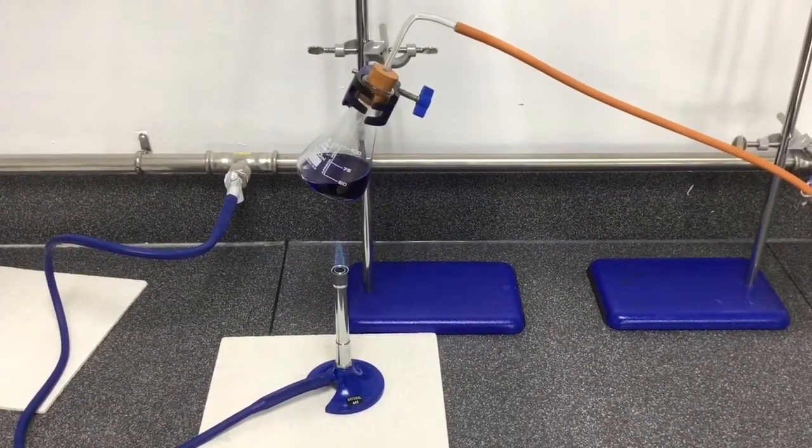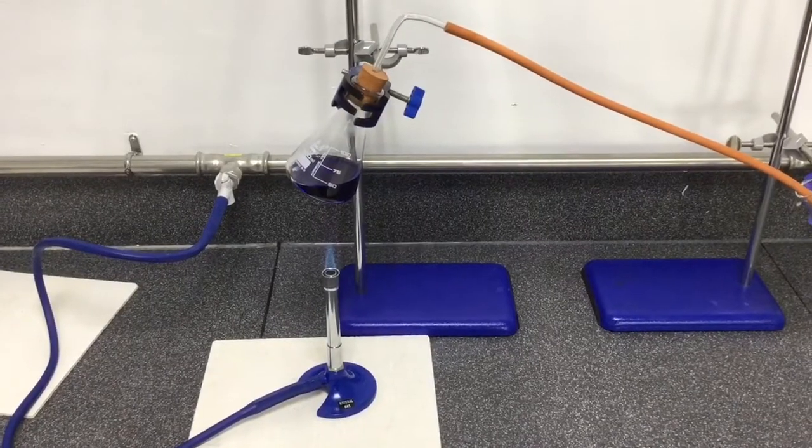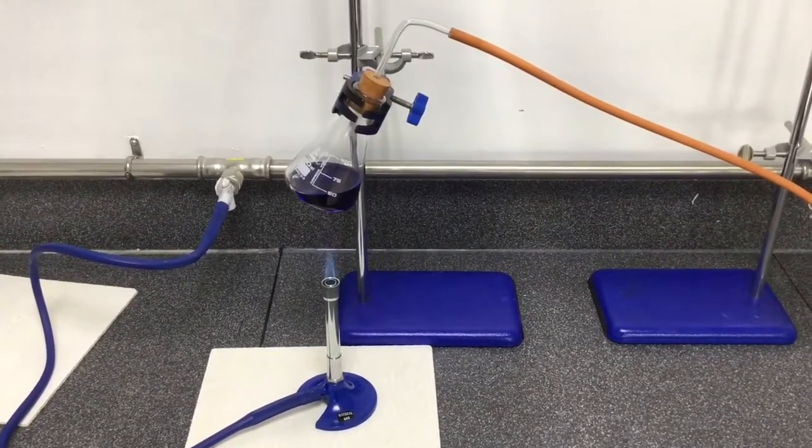We can then begin to heat the inky water mixture using a Bunsen burner. This will cause the water in the mixture to boil before the ink.